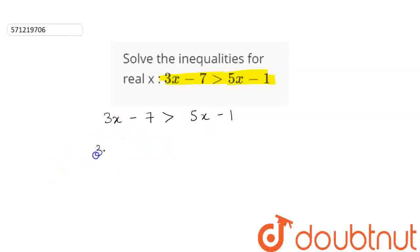If we subtract 3x from both sides, we will get 3x minus 7 minus 3x is greater than 5x minus 1 minus 3x.